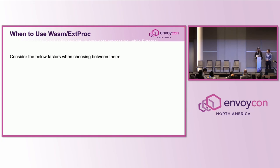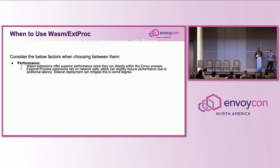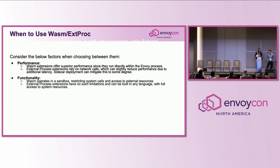We support two types of extensions: Wasm and external process. Picking the right one depends heavily on your use case. If performance is a high priority, we'd probably go with Wasm because they run directly within Envoy, which reduces overhead. External process relies on network communication, which can add a bit of latency — though as discussed, we can use a sidecar deployment to reduce this. When it comes to functionality, Wasm runs in a sandbox with access only to resources exposed by the sandbox, which is a limitation. However, external process extensions can be written in any language and have full access to the real world.